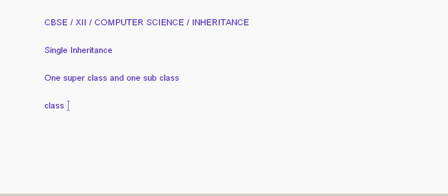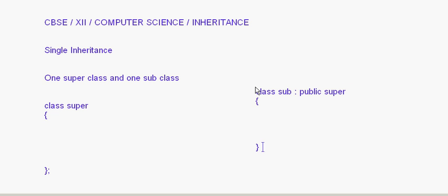Supposing I have here 'class super' with some coding inside it. Then I write 'class sub'. This class sub is the subclass and I want to inherit it from the super class, so I write 'class sub : public super'. In this case, super becomes the super class and sub is the subclass inheriting from it.